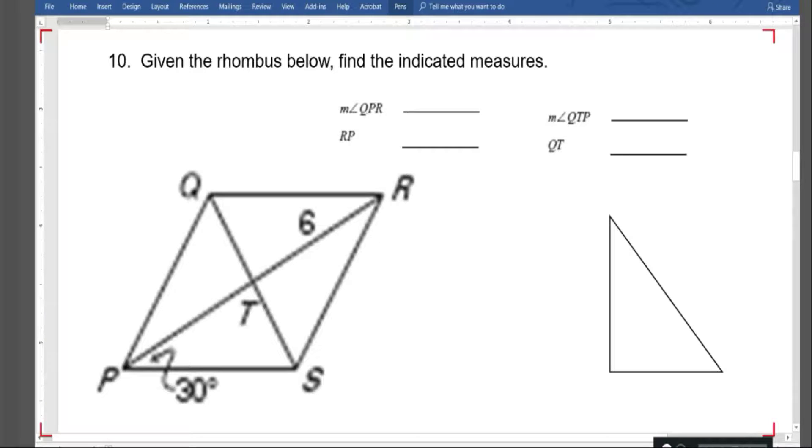All right, given the rhombus below, find the indicated measures. So the first one I'm looking for is angle QPR. That would be QPR. So that's this angle right here. Well that's easy.